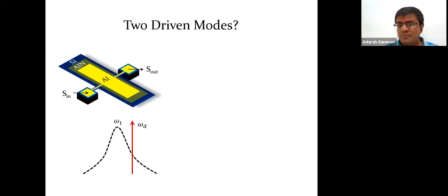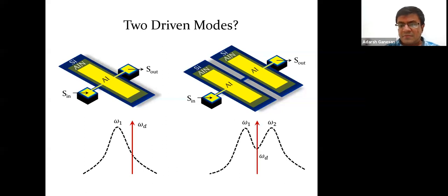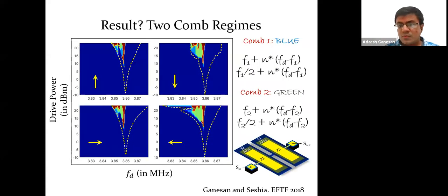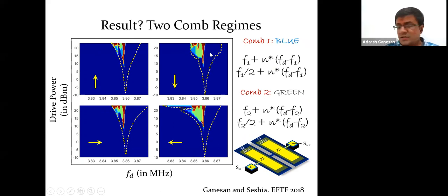Now, supposing I drive two modes rather than one: I add two modes and drive at ω_d somewhere in the middle. This can couple to either ω₁ or ω₂. If it couples to ω₁, you get a comb spacing of ω_d minus ω₁; if it couples to ω₂, you get spacing of ω_d minus ω₂. I did the experiment to show that you have two different comb regions — one with spacing determined by ω_d minus ω₁, the other by ω_d minus ω₂. The blue combs and green combs each have their own regions where they exist.